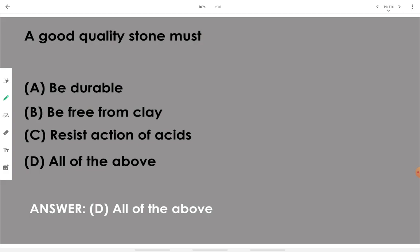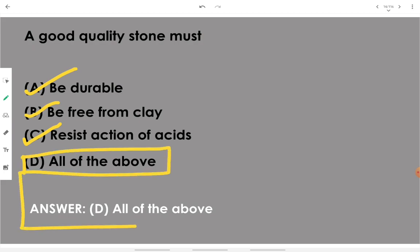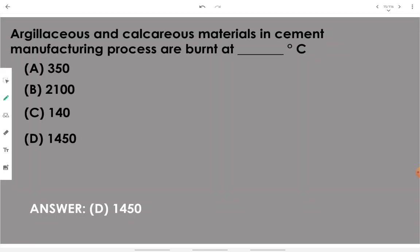A good quality stone must be durable, free from clay — there should be no clay impurity on the surface or inside the pores — and it should resist acid action. The correct answer is all of the above: a good stone should be durable, free from clay, and resistant to the action of acids.